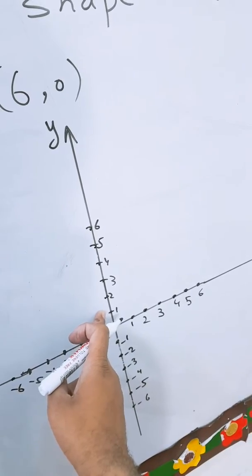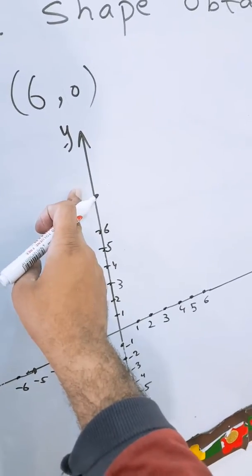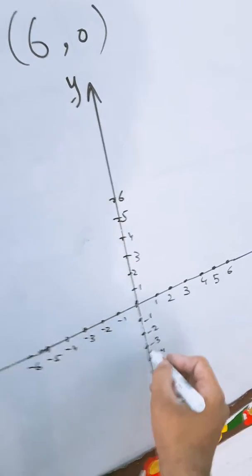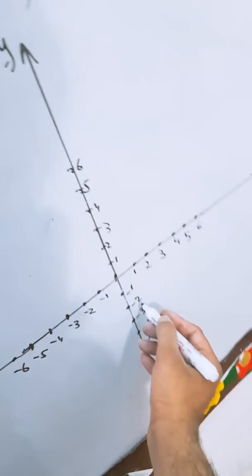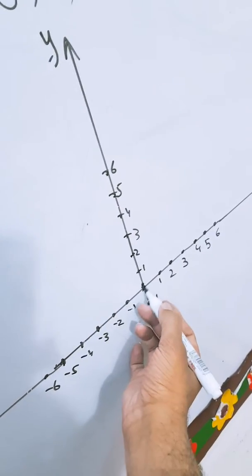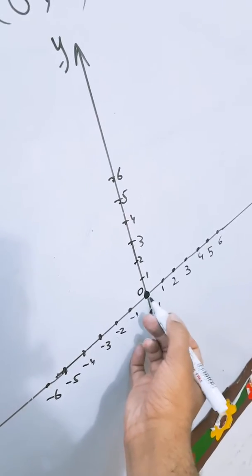Similarly, y-axis starts from here: one, two, three, four, five. Here are the positive values of y-axis. And below this origin there are negative values of y-axis: minus one, minus two, minus three, minus four, minus five, minus six.